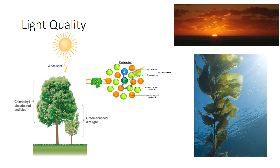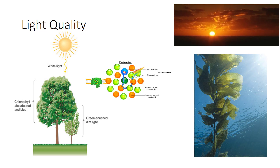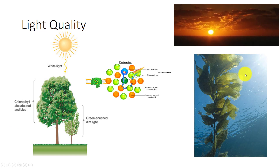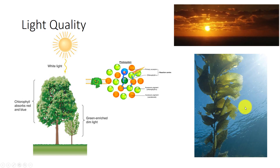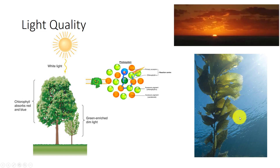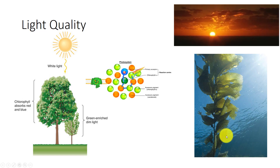Similarly, algae that grow near the surface of lakes and oceans receive complete light, but water absorbs red and violet. Many kelps grow in deep ocean water and receive mostly green and blue light. Their accessory pigments absorb these wavelengths, and therefore the kelps appear yellow-brown to us.